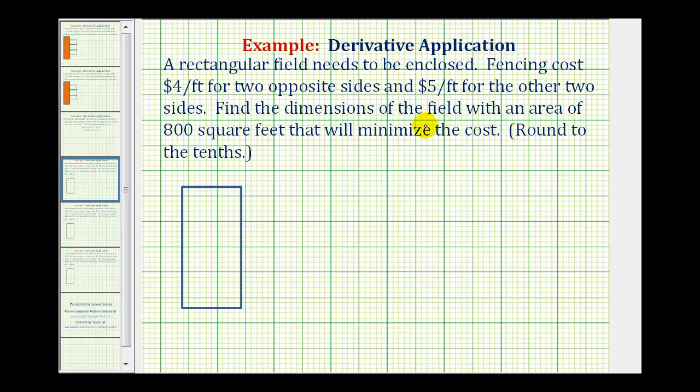Let's sketch a model for this situation. We have a rectangle and therefore the opposite sides are the same length. Let's let these two sides equal x feet, and these two sides equal y feet. We know the area of this field must be 800 square feet. The area of this rectangle would be x times y, which must equal 800 square feet.